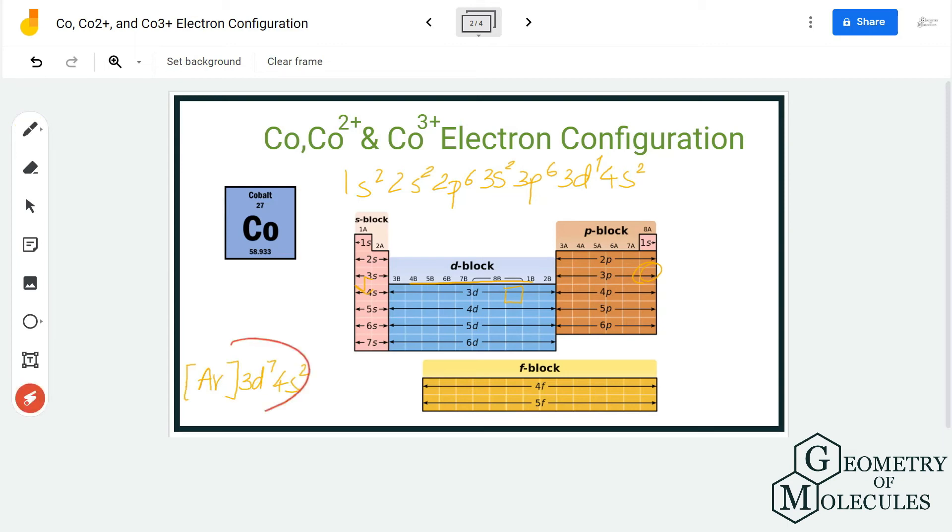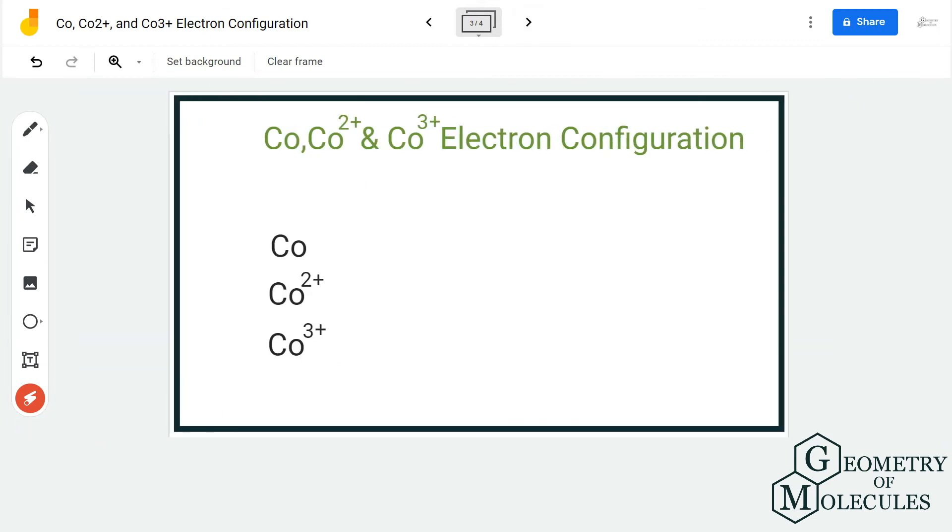Now for Co²⁺: any element that loses electrons acquires a positive charge, while elements that accept electrons acquire a negative charge. Since there's a +2 charge, Co is losing 2 electrons from the 4s orbital because it ionizes first. So the electron configuration for Co²⁺